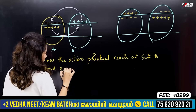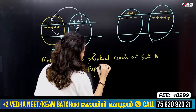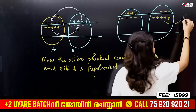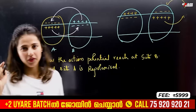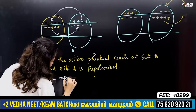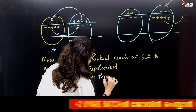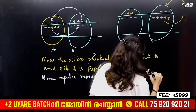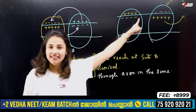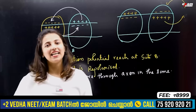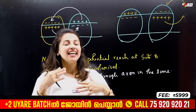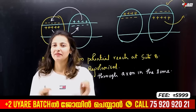Site A is repolarized. The action potential reaches from B to C. We can see the action potential move from A to B to C. If we have an action potential at A, then B and C follow, completing the conduction. This is how the impulse is generated and conducted.